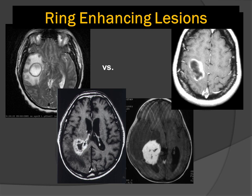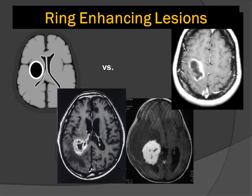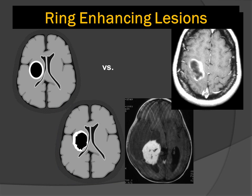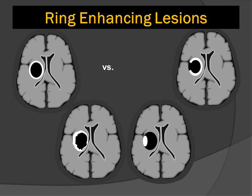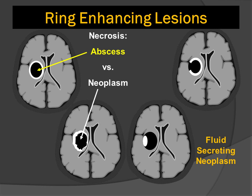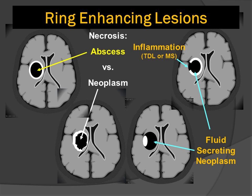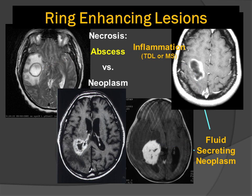When examining ring-enhancing lesions, we look for these characteristic patterns: round and smooth for an abscess; shaggy inner margin and thick wall for a necrotic neoplasm; an incomplete or non-enhancing rim for a fluid-secreting tumor; and a partial rim of enhancement in tumefactive demyelinating lesions. Abscess, neoplasm with necrosis, fluid-secreting tumor, and tumefactive demyelination can all have a characteristic pattern of enhancement.